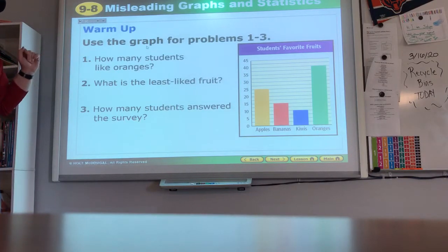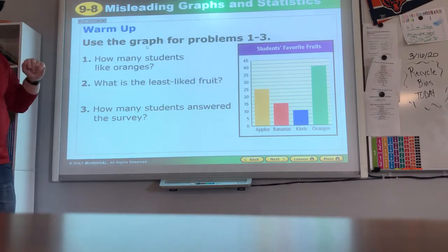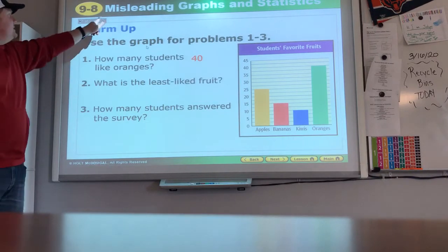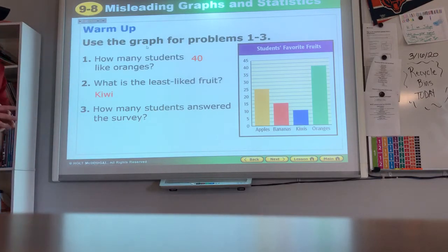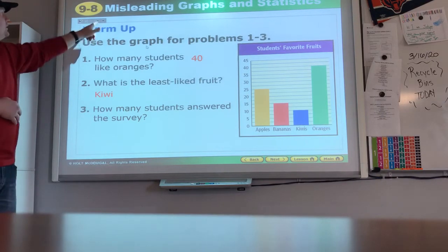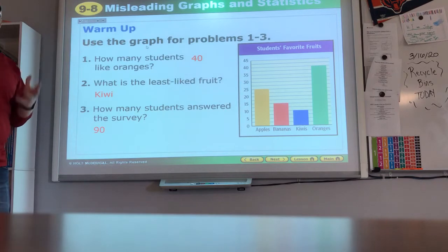So warm up. How many students like oranges? Hopefully you can read a bar graph. You see oranges goes all the way up to 40, so we know that 40 students like oranges. All right. What is the least liked fruit? See that kiwis are lowest at 10 so they're least liked. And how many students answered the survey? Well if we would take all the numbers from each group and add them together we would get our total of 90 students.